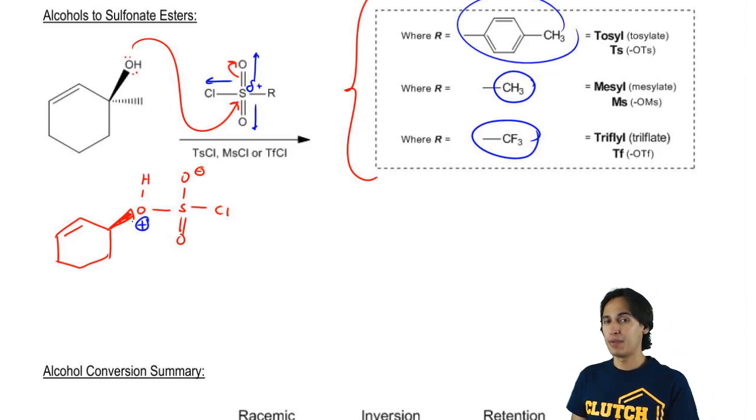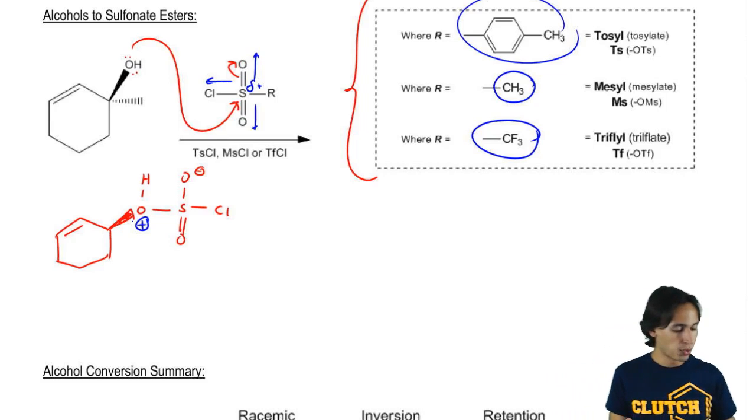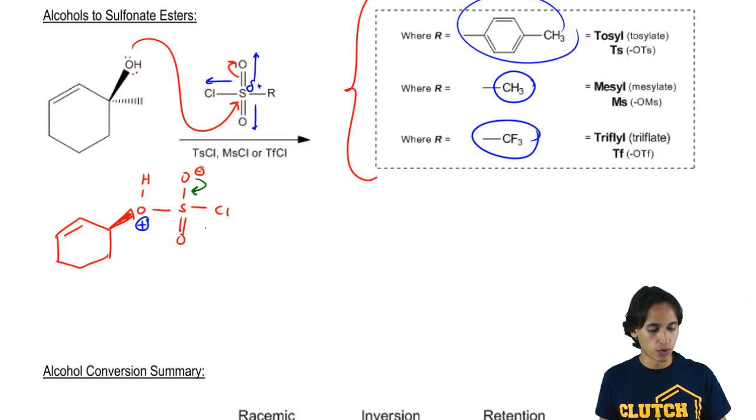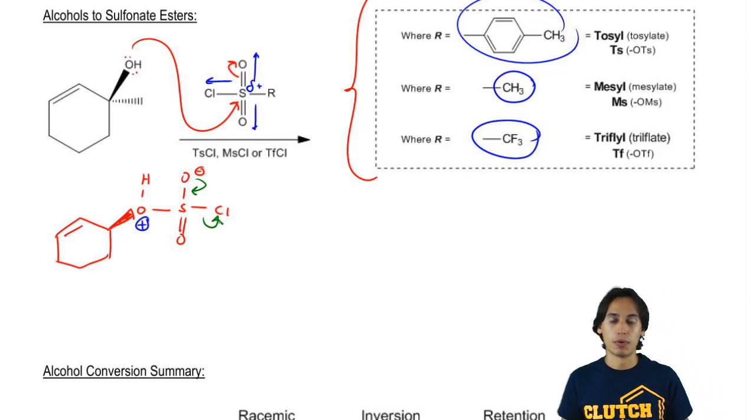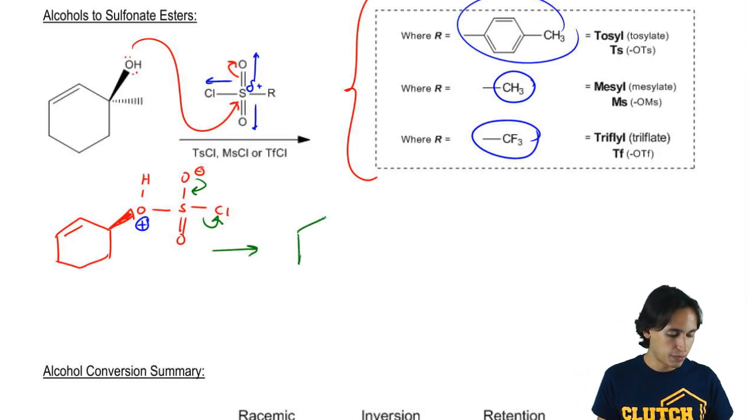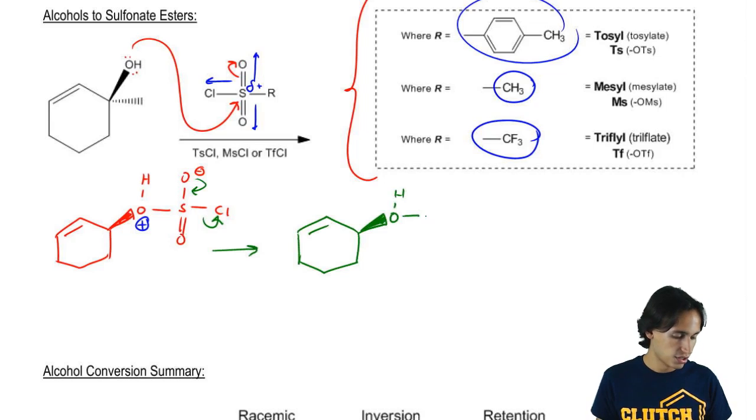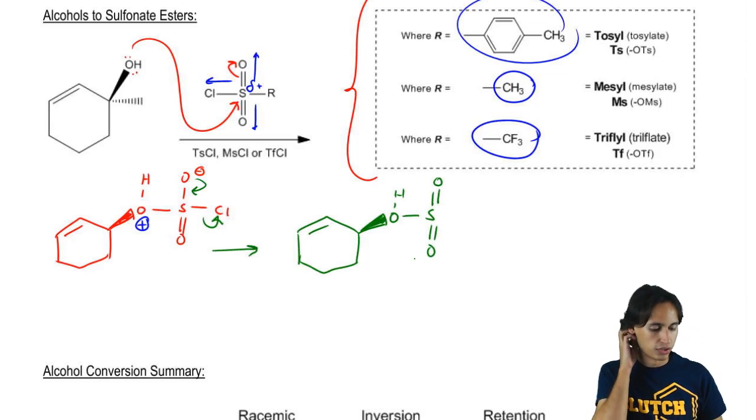Cool. So can you guys predict what the next step might be? Do I have any good leaving groups present? I do. Do I have a Cl? So what I could do is I could just reform the double bond and kick out the Cl. And what that's going to give me now is same stereochemistry, I'm still in the front, still have an H. But now what I have is a molecule that looks like this. And I'm missing the R group, I never drew it, wow.